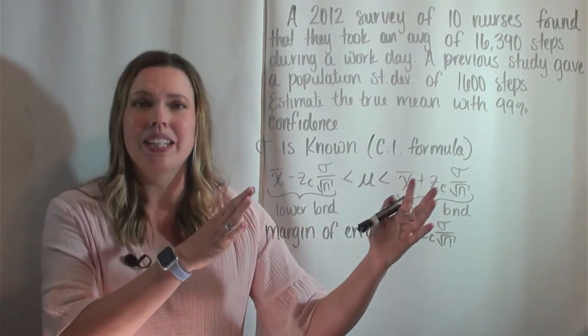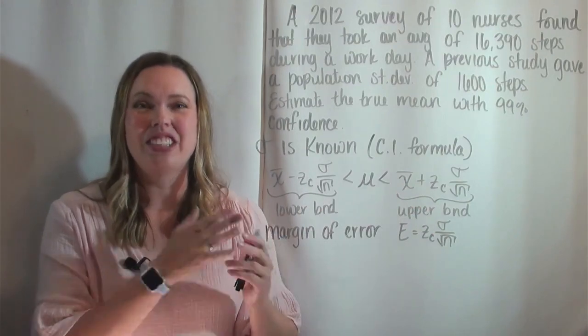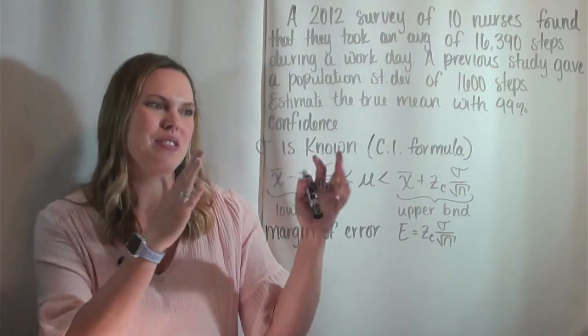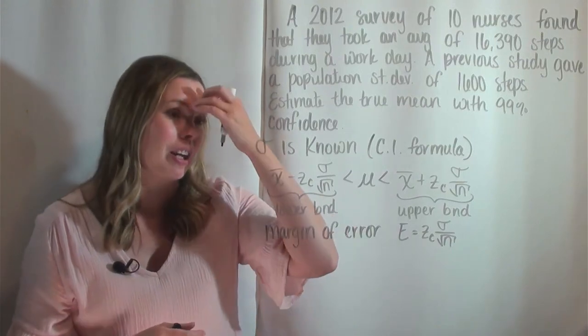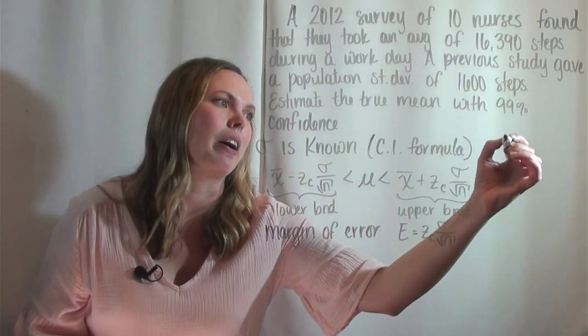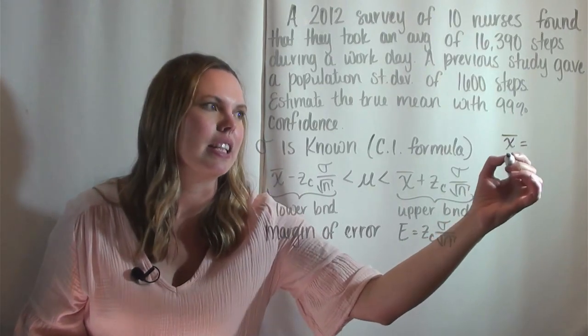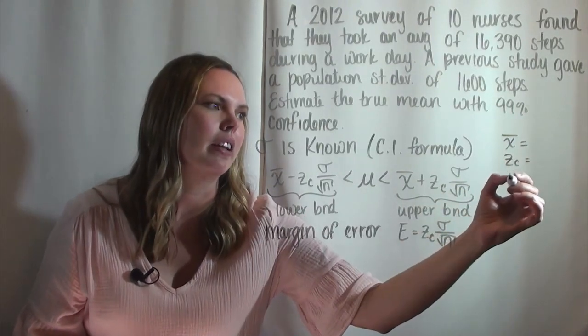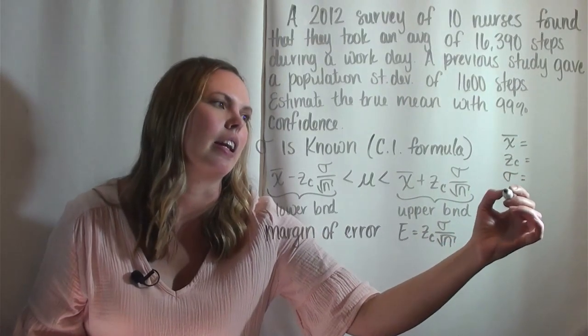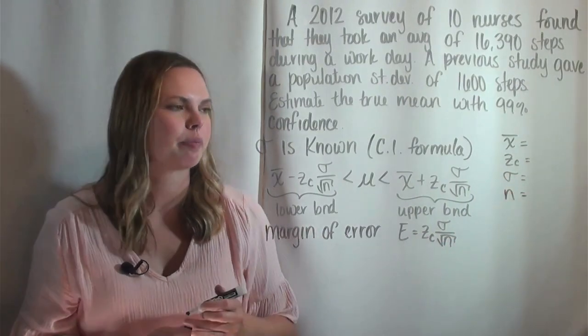So I just need to plug into this formula. And so therefore I just need the pieces of it and these should be found in this paragraph. So I'm just going to write my variables here that I need. And those are x̄, z_c, sigma, and n.